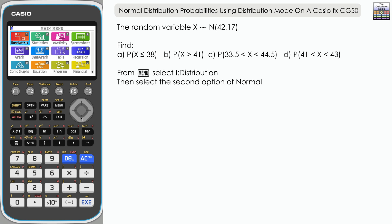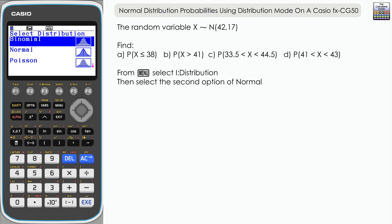From the menu, we need to select Distribution, which is option I. We've got three choices here, and for this question we want to choose Normal.